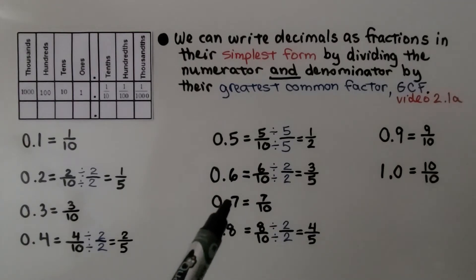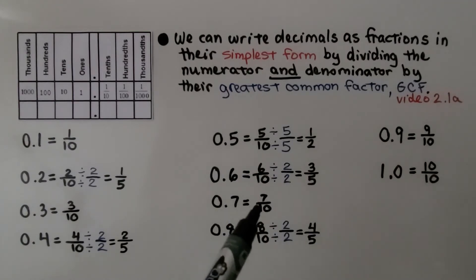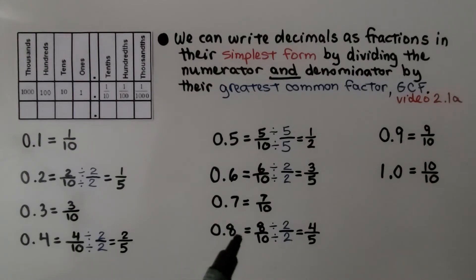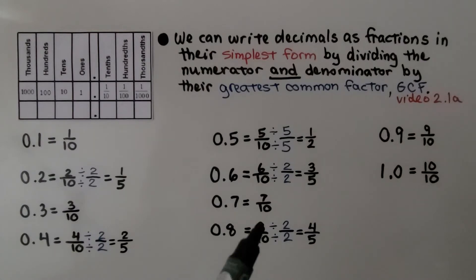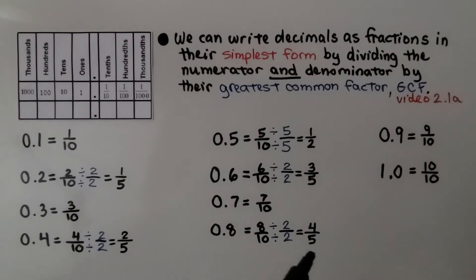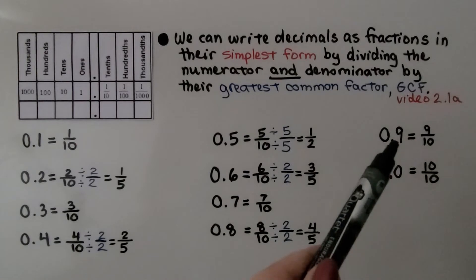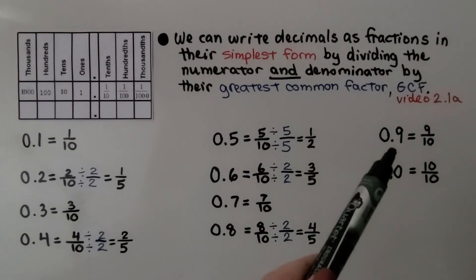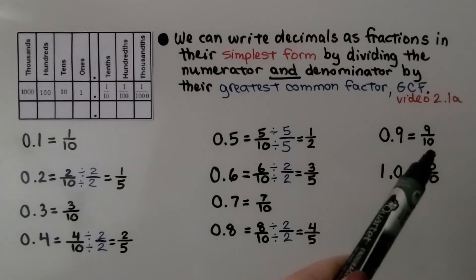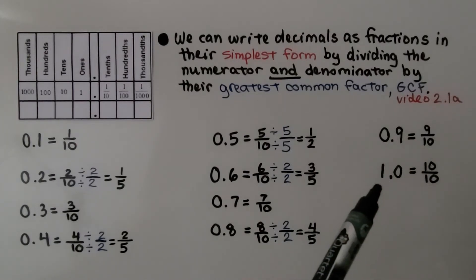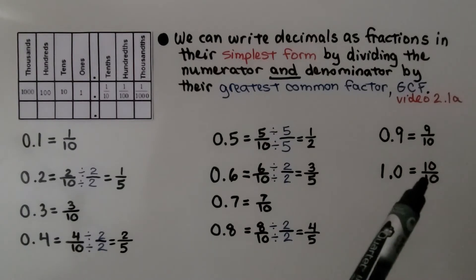0.7 is equal to 7 tenths. 0.8 is equal to 8 tenths — we can simplify it by dividing the numerator and denominator by 2, so it's equal to 4 fifths. 0.9 is 9 tenths. And 1.0 — that's one whole, equal to 10 tenths.